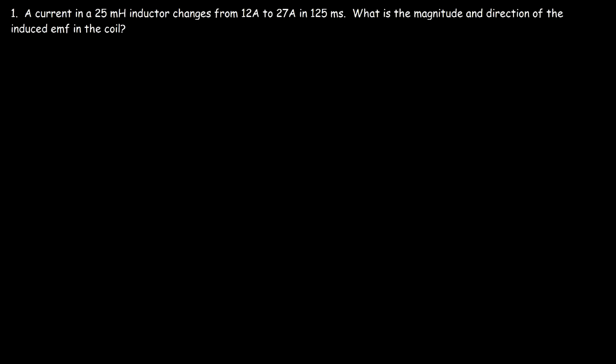In this lesson we're going to go over self-inductance and solve some problems associated with it. In this example we have a current in a 25 millihenry inductor that changes from 12 amps to 27 amps in 125 milliseconds.